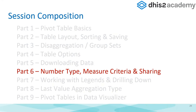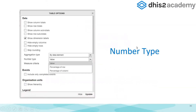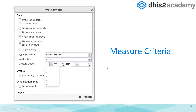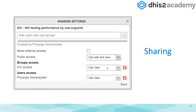Part six covers number type, measure criteria, and sharing. In the DHIS2 pivot table options there is a place to define number type and a place to define measure criteria, which we will discuss. You can also share your tables. We will be focusing on number type, measure criteria, and sharing of pivot tables.